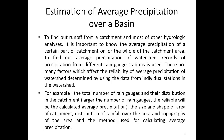In order to find out the runoff from a catchment and most other hydrologic analyses, it is important to know the average precipitation of a certain part or the whole of a catchment area. Records of precipitation from different rain gauge stations are used. There are many factors which affect the reliability of average precipitation of a watershed determined using data from individual stations.